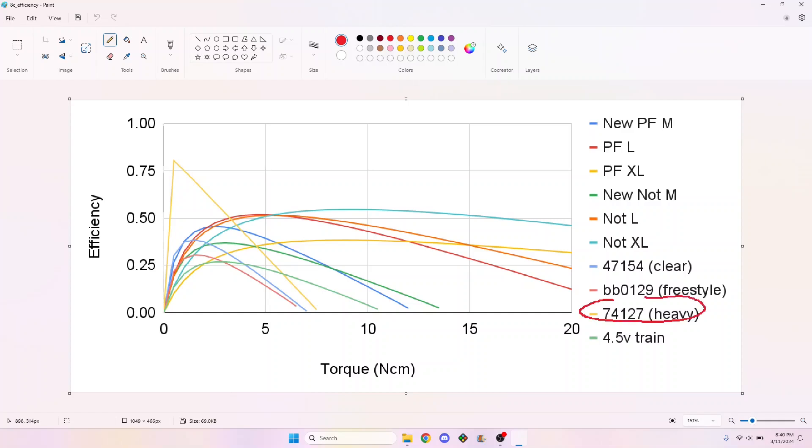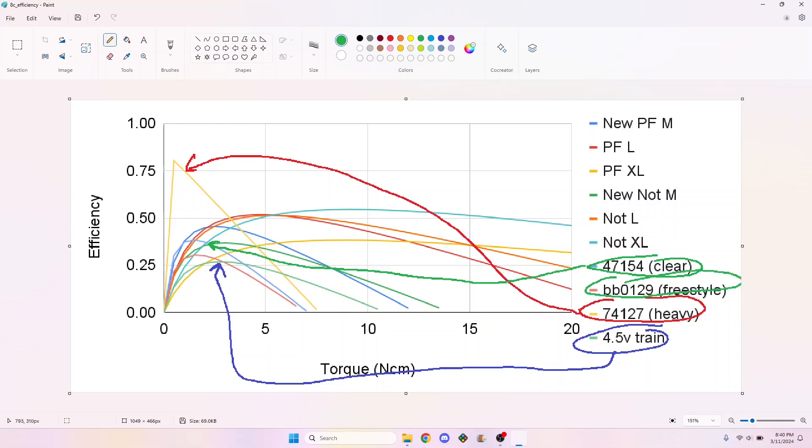The old train motor sucks. The clear geared motor and the freestyle motor don't seem that efficient either, possibly due to the large number of gears inside both units.